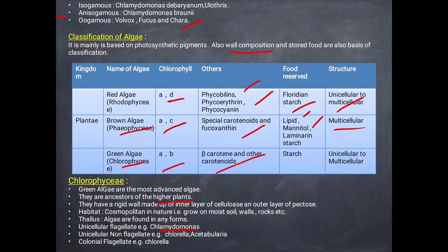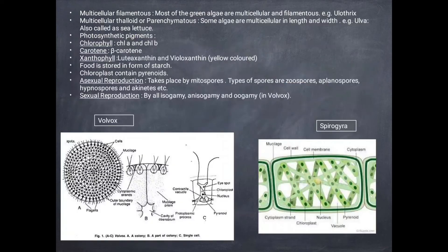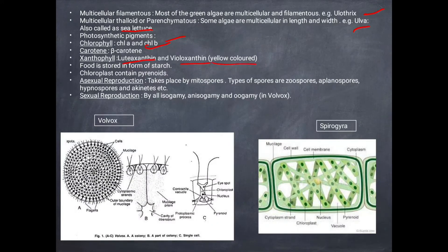Colonial flagellate forms include Volvox. Multicellular forms include filamentous Ulothrix and multicellular thalloid forms like Ulva. Photosynthetic pigments in green algae are chlorophyll A, chlorophyll B, and beta-carotene. Asexual reproduction is by zoospores, aplanospores, hypnospores, and akinetes. Sexual reproduction is by isogamy, anisogamy, and oogamy — oogamy is present in Volvox.